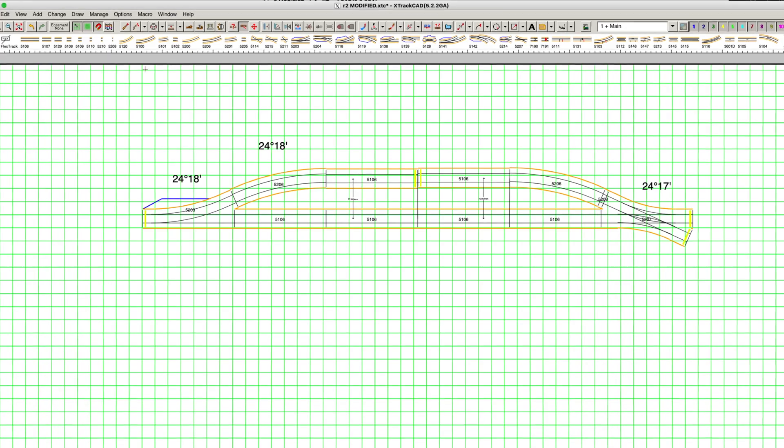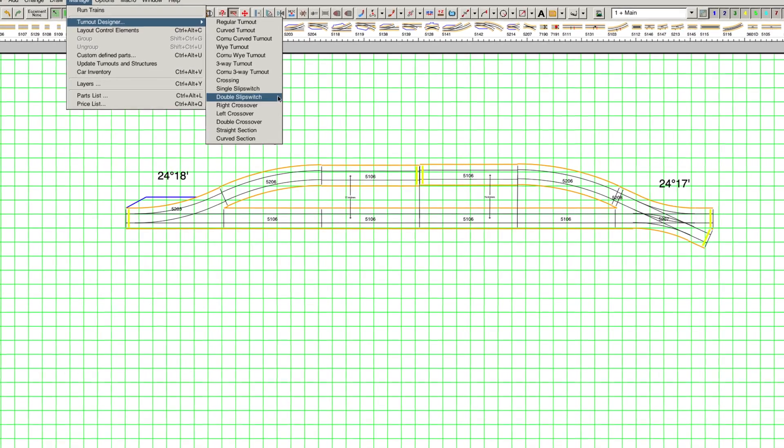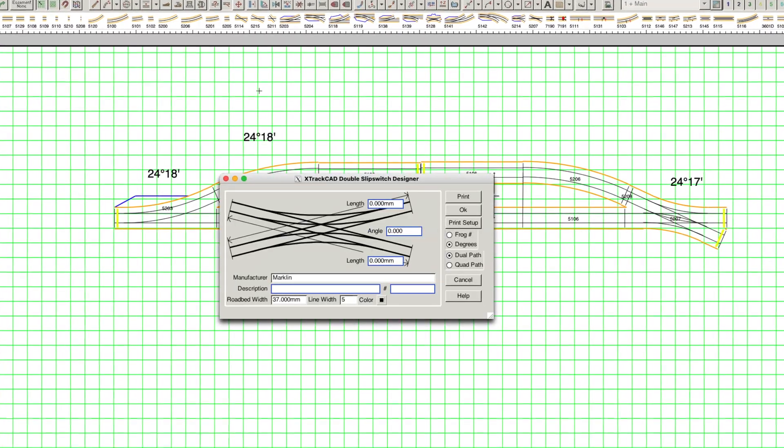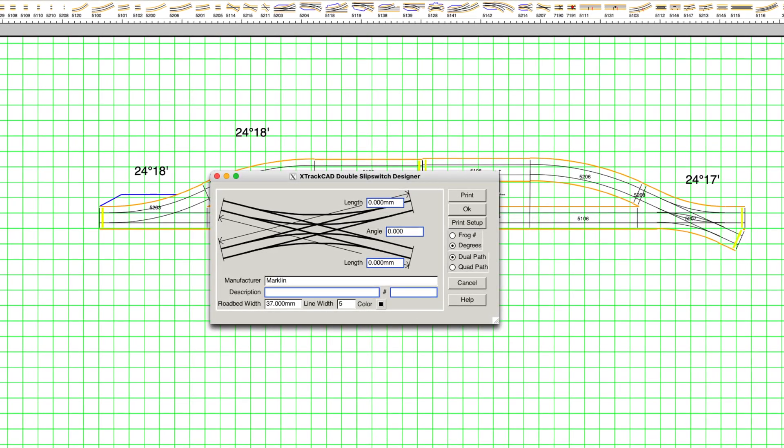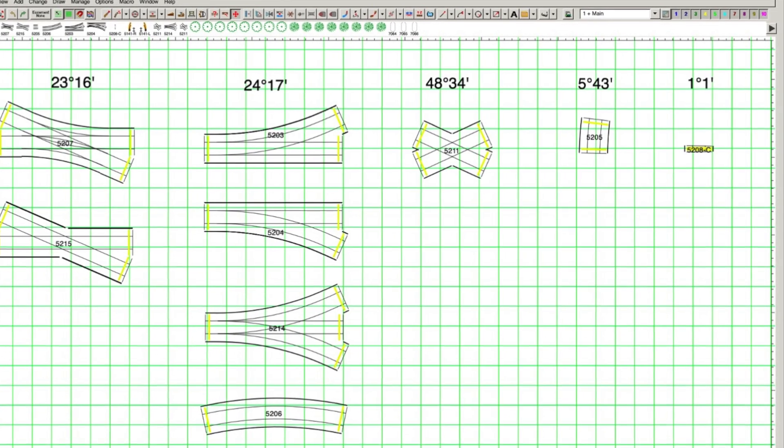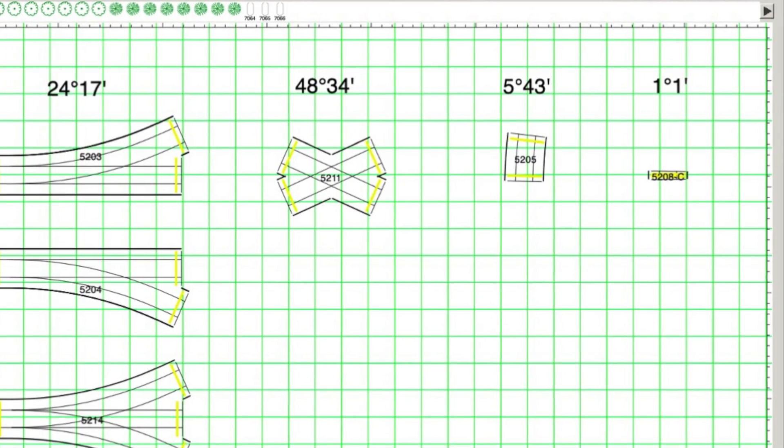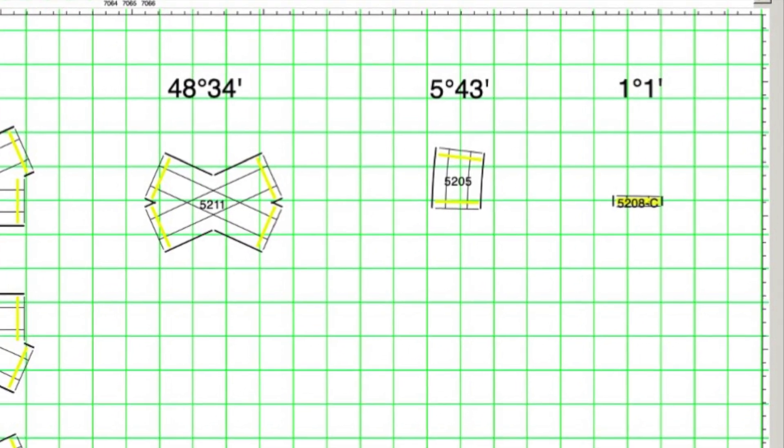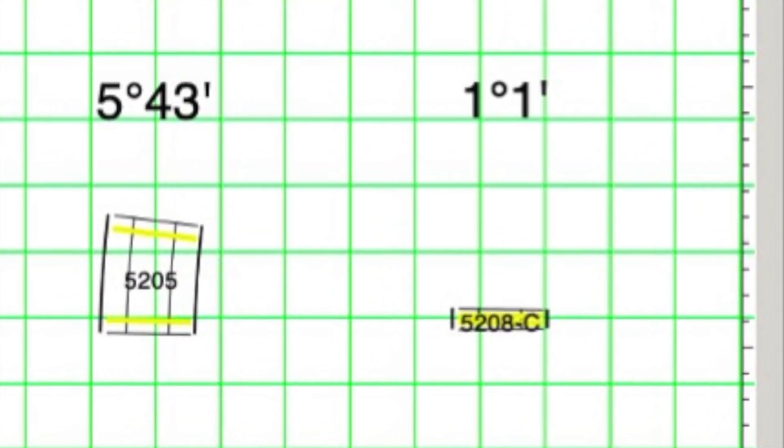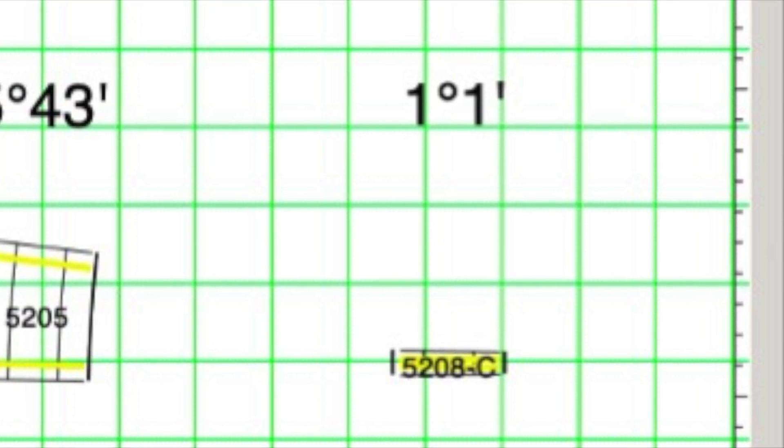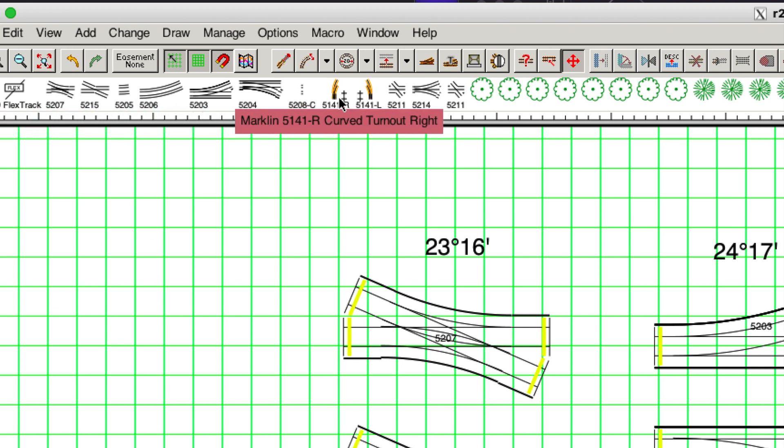The idea of a curved 5208 mentioned earlier intrigued me. Whilst I was checking X-Track CAD, I noticed functionality to create custom track sections. So I decided to have a go to see how this would work. Given the tweaks implemented in the M-track library there, I had to recreate everything radius 2, apart from two standard curves, to match the Märklin data exactly. And I added an additional curved 5208, which I called 5208-C, with an angle of 1 degree 1 minute.